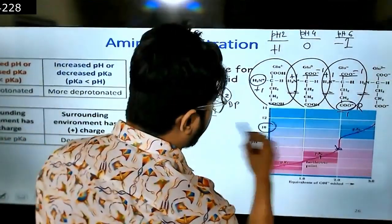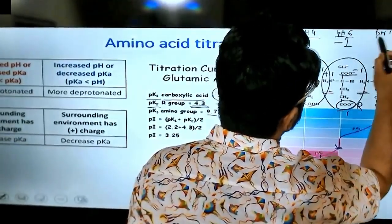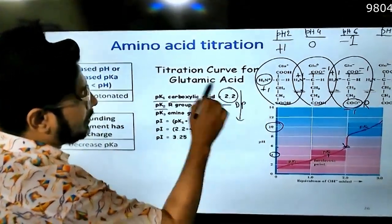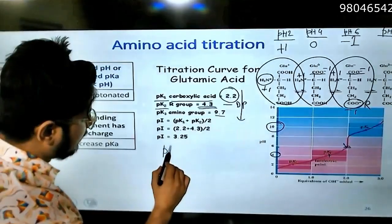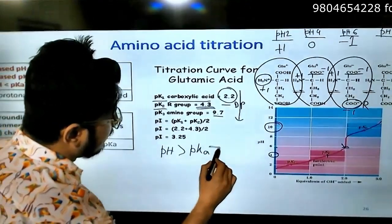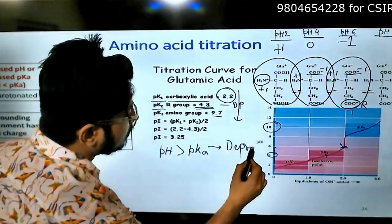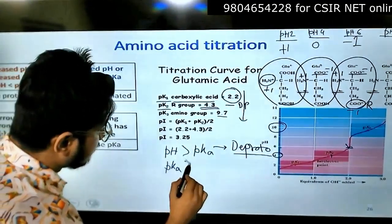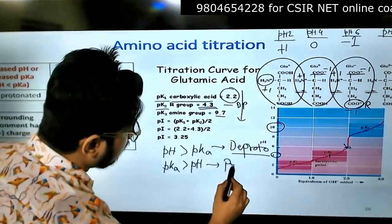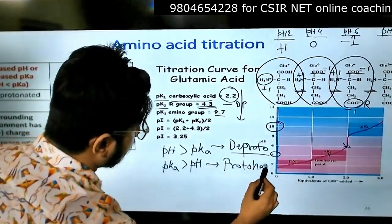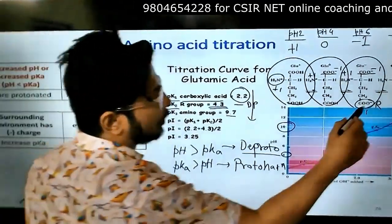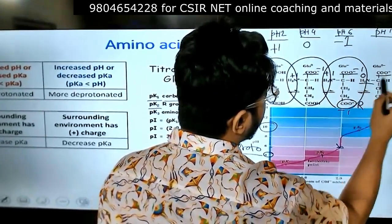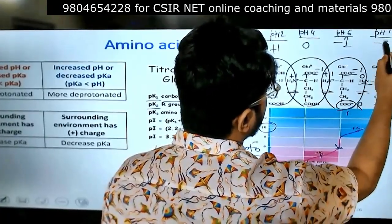Increase the pH to 10. In pH 10, pH is more than any of the pKa. And we know that if pH is more than pKa, then deprotonation. Deprotonation everywhere - here, here and here. So ultimately what we get? Zero here, minus 1 here, minus 1 here. So total charge of minus 2.